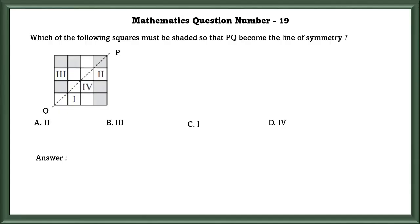Mathematics question number 19: Which of the following squares must be shaded so that PQ becomes the line of symmetry? Looking along the line, most parts are symmetrical, but one part is not symmetrical. So, the part we have to shade is Roman numeral I.